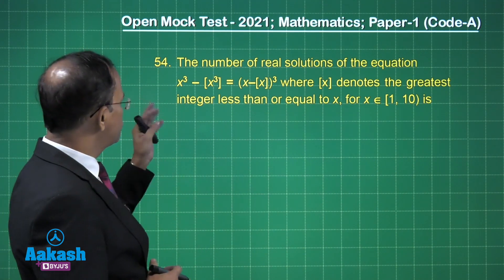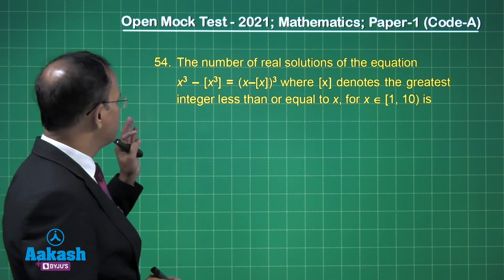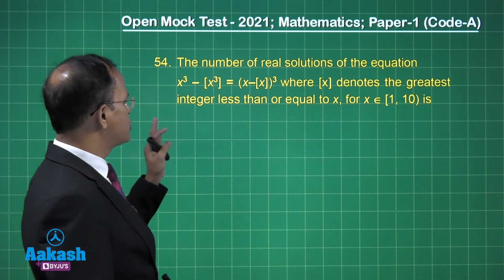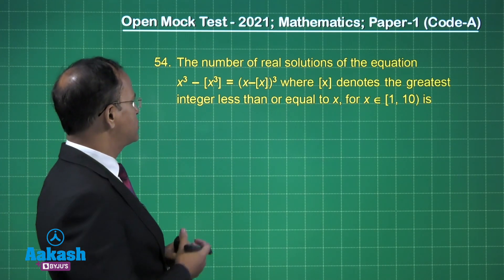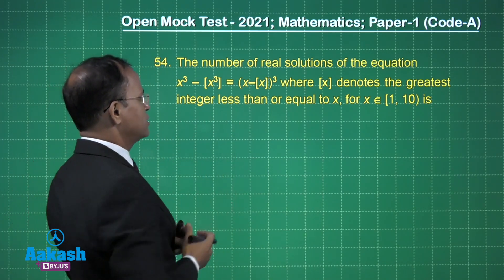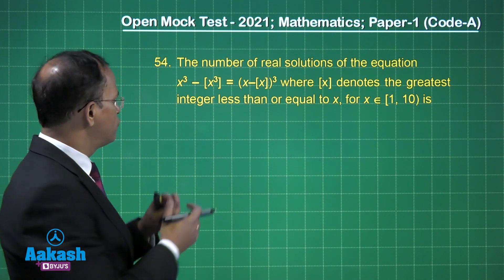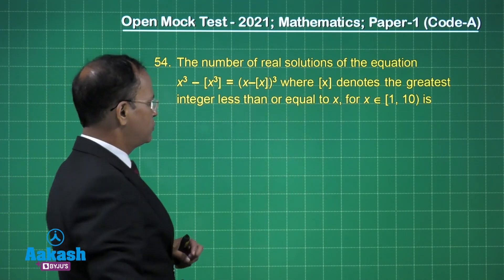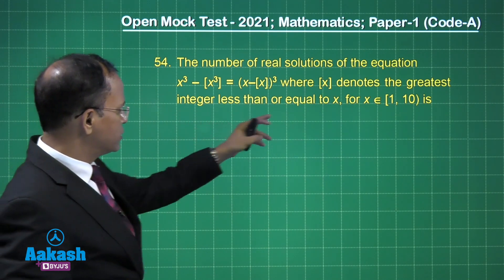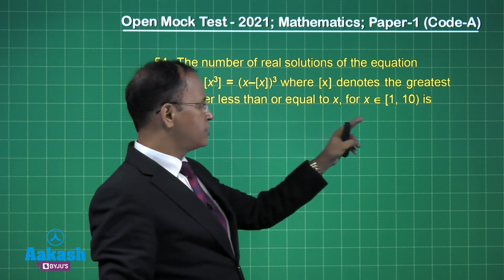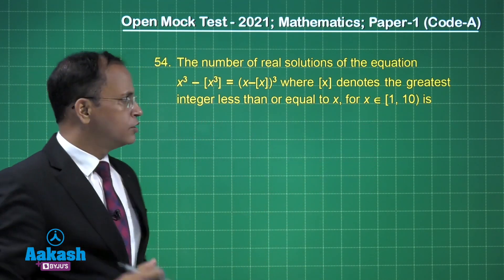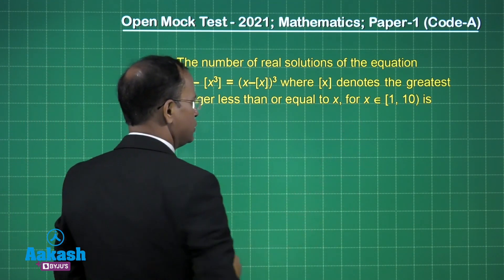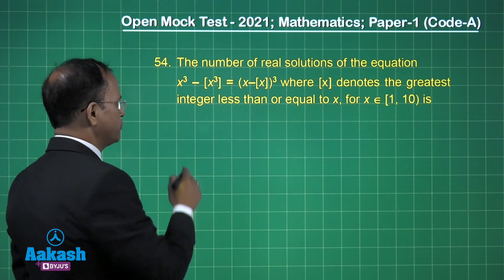Now let us talk about question number 54. The number of real solutions of the equation x³ − [x]³ + x − [x] = (the expression involves the greatest integer function cubed), where x belongs to the closed-open interval [1, 10).